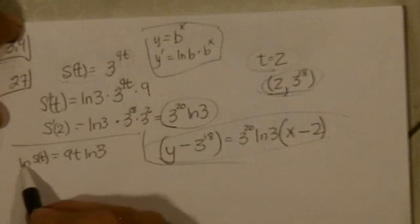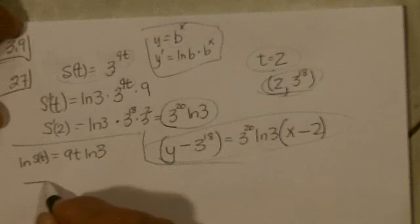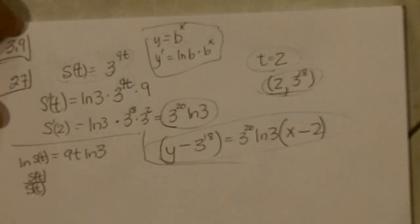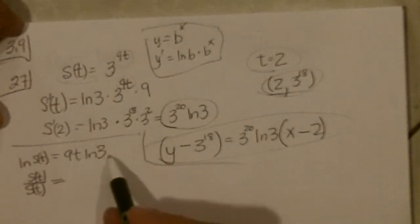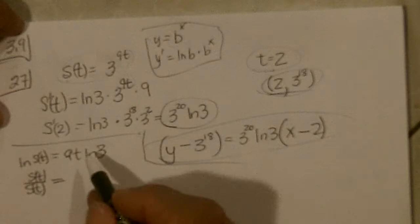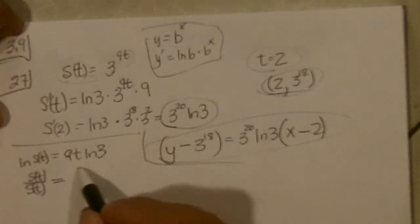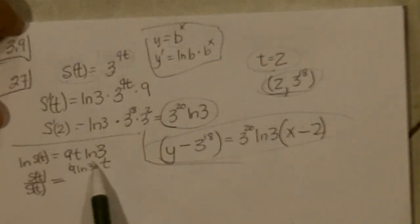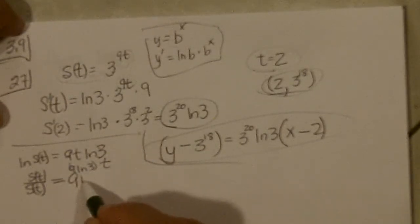So now take the derivative, and the derivative of this would be 1 over S of T times the derivative of S of T. And that will equal the derivative of this. Well, the ln 3 and the 9 are all constants. So it's basically 9 ln 3, this number times T, and the derivative of T is 1. So it's just 9 ln 3.